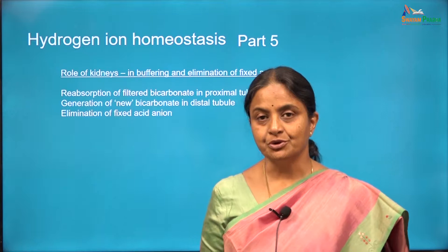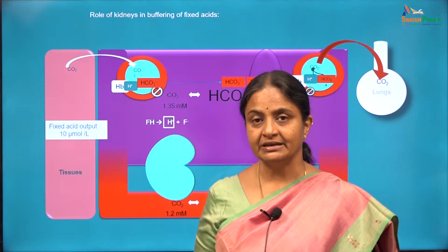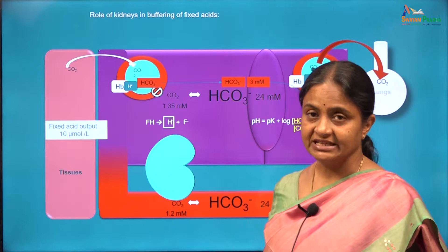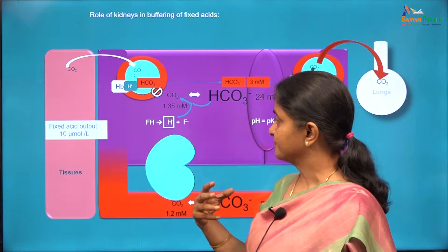Kidneys play a very important role in the buffering of fixed acids, more specifically in providing plasma bicarbonate for buffering of fixed acids. The fixed acids would protonate in plasma and the protons of fixed acids will consume plasma bicarbonate and get eliminated therefore.